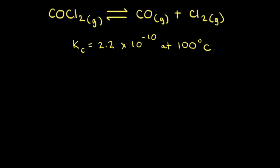Let's look at another reaction: the decomposition of phosgene (COCl₂) to form carbon monoxide and chlorine gas. KC for this reaction is 2.2 × 10⁻¹⁰ at 100 degrees Celsius. Given concentrations at a moment in time, we need to determine if the reaction is at equilibrium, and if not, predict which direction the net reaction will go. Our approach is to calculate QC and then compare it to KC.